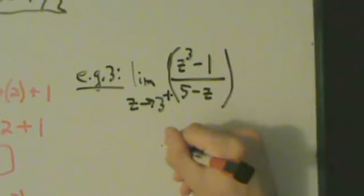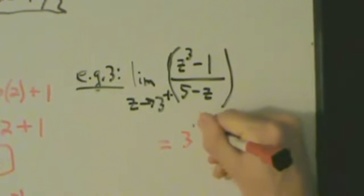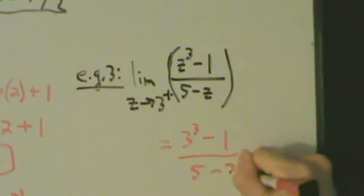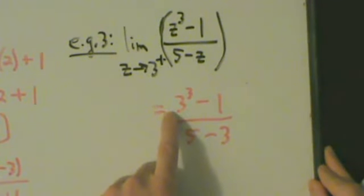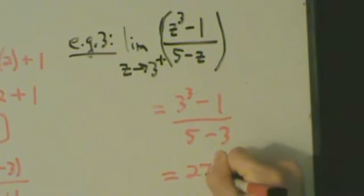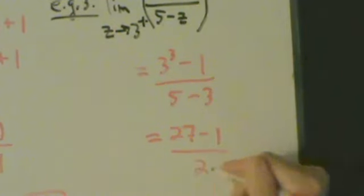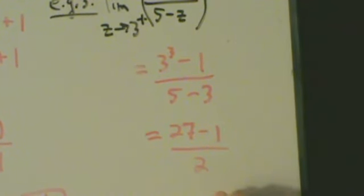So this is going to be equal to (3 cubed minus 1) divided by (5 minus 3). 3 cubed is 3 times 3 times 3, which is 27. So this is 27 minus 1 divided by 5 minus 3, which is 2. So this is 27 minus 1 over 2. 27 minus 1 is 26, and 26 divided by 2 is 13. That's our answer for Example 3.